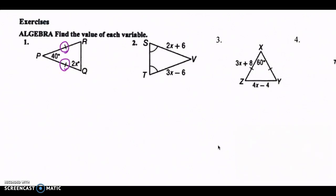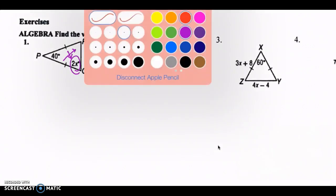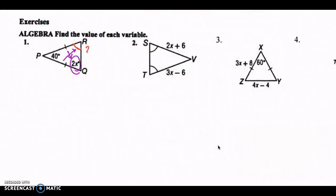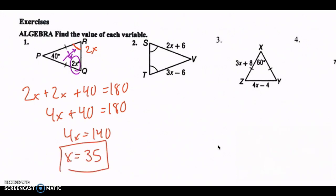This isosceles triangle, both sides are congruent, which means its opposite angles are congruent. So if this is 2x, then angle R right here has to be 2x as well. So all the angles of a triangle add up to 180. Do a little math magic. 4x equals 140, x should equal 35. Boom.